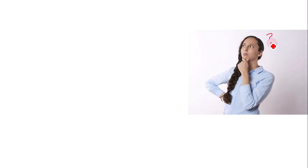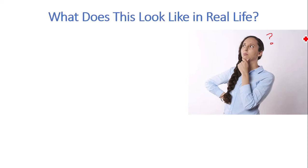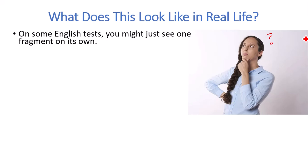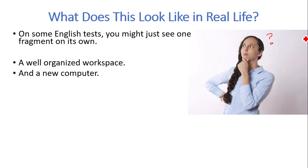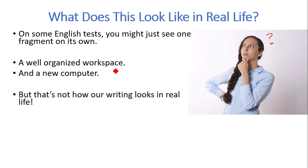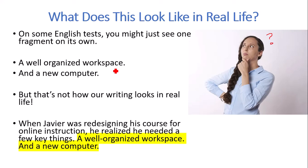You might be asking: what does this actually look like in real life? On English tests you might see one fragment on its own and be asked to fix it. But in real life our writing looks different — we don't write in single sentences, we write in groups of sentences and paragraphs. So here are some single sentences: 'A well-organized workspace.' 'A new computer.' The first is missing a verb, and the second is missing both a subject and a verb. But that's not really what our writing looks like in real life. Here is the group of sentences these could be found in.